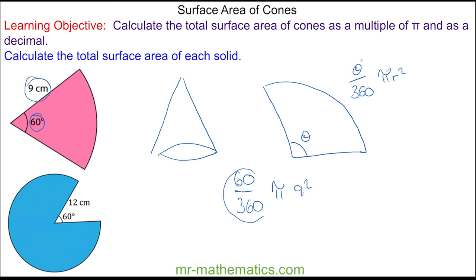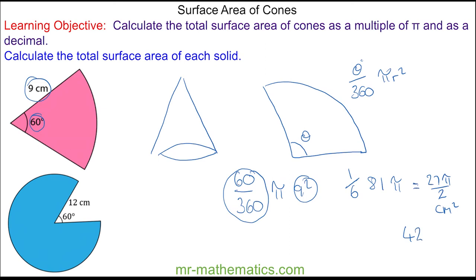This fraction simplifies to one sixth. Nine squared is 81, so it is one sixth of 81 pi, which simplifies to 27 pi over 2 centimeters squared. As a decimal we can approximate this as 42.4 centimeters squared to three significant figures.